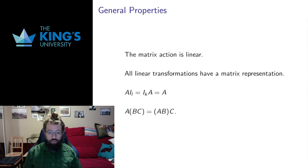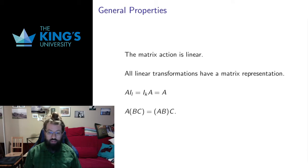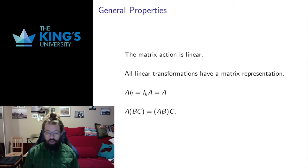Now I could do proofs of some very general properties. There are some very important properties that I stated that I didn't give proofs for: the fact that the matrix action is linear, the fact that all linear transformations have a matrix representation — that connection so that any linear transformation is the same as a matrix action. It's a very important connection.